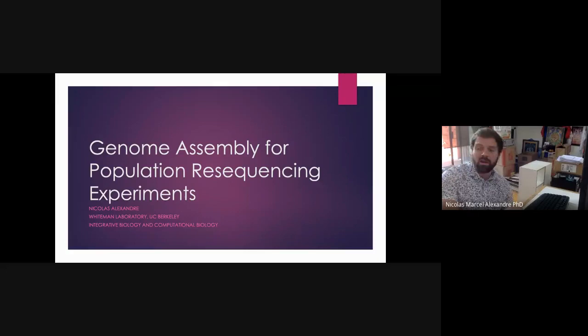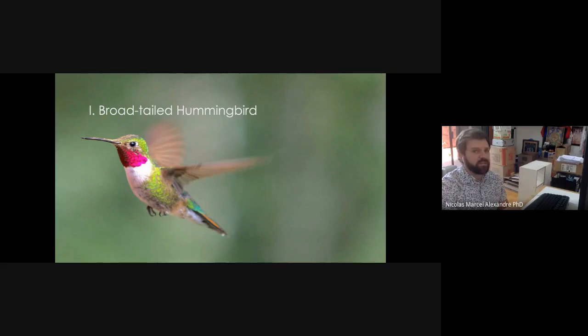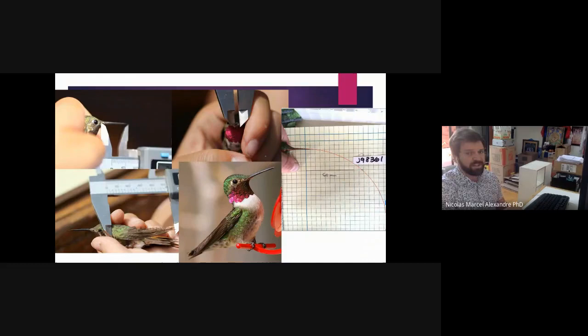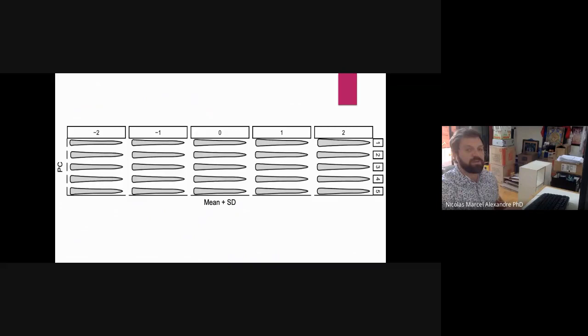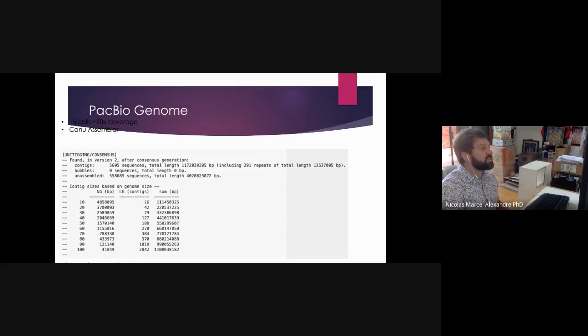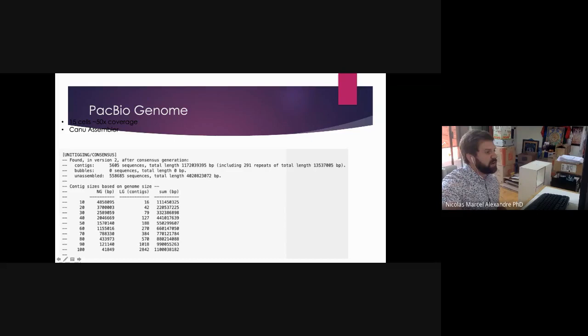Nicholas Alessandri is presenting two different systems. The first is the broad-tailed hummingbird, which he has been setting up as a non-model organism for studying population genetics since 2015. He's been capturing birds, measuring various traits, and has resequenced the genomes of over 500 individuals. To do this resequencing experiment, a high-quality reference assembly was needed for a genome-wide association study on various traits. The first assembler used was Canu, with about 15 SMRT cells on PacBio SEQUEL 2, yielding an original N50 of roughly 550 megabases.